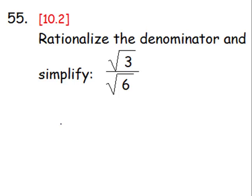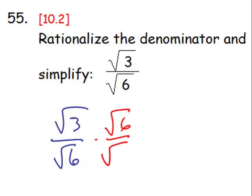For number 55, it's done very similarly, square root of 3 over square root of 6. We will multiply this fraction by square root of 6 over square root of 6, so we can create a perfect square in the denominator, square root of 36.